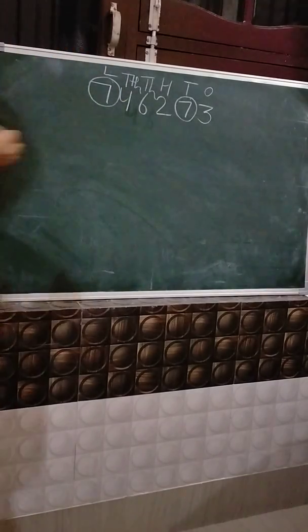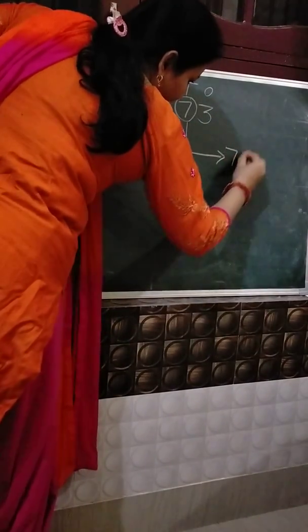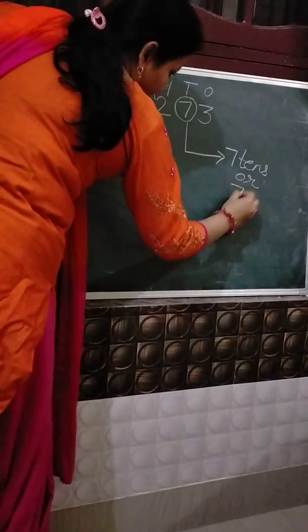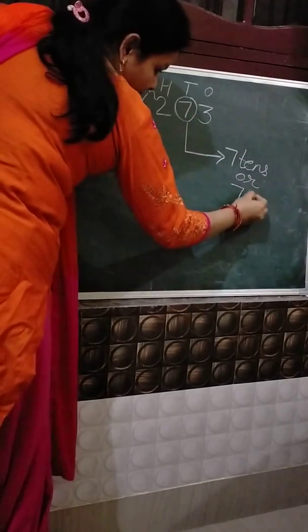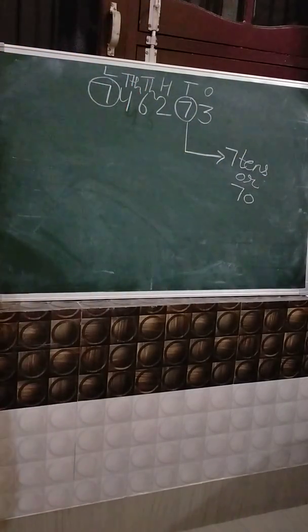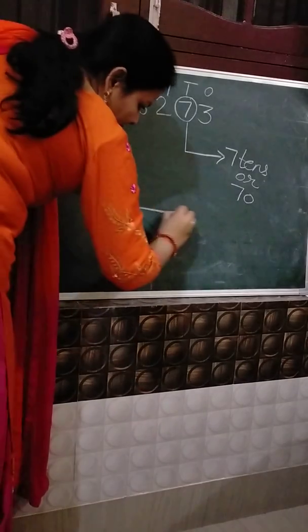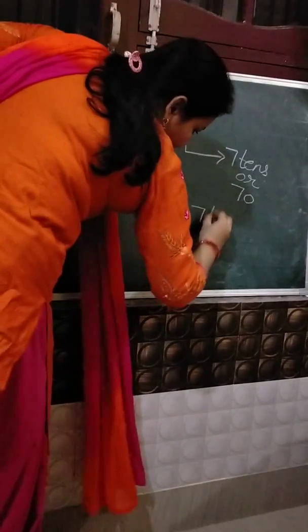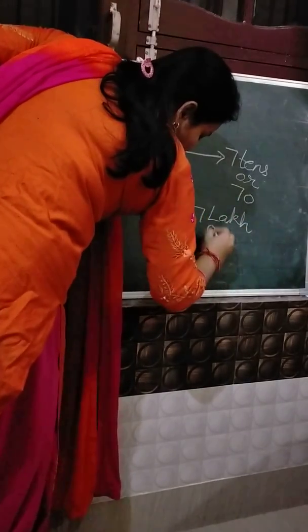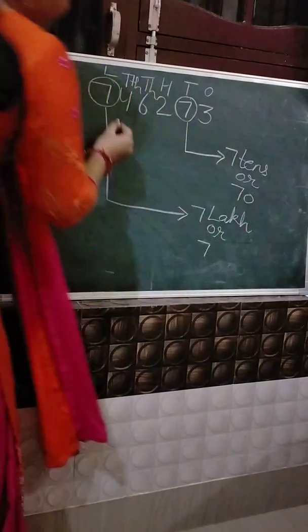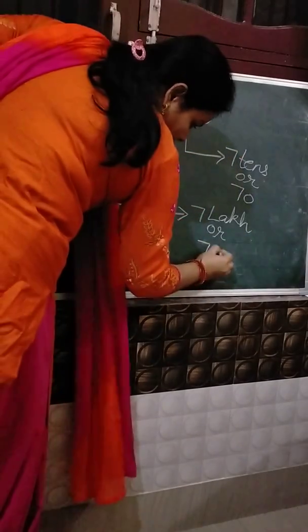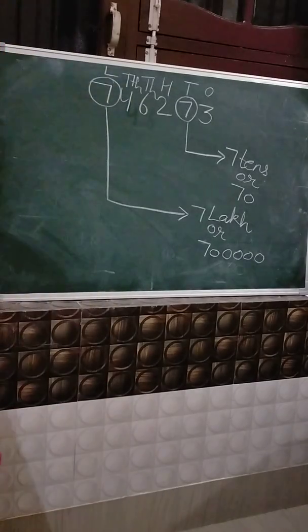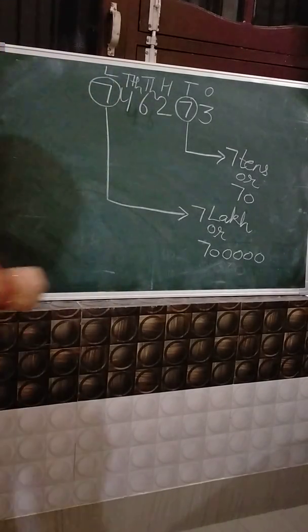The place value of the first 7 is 70. The place value of the second 7 is 7 lakh, or 7,00,000. Now compare the place values of both 7s.